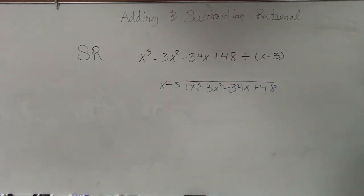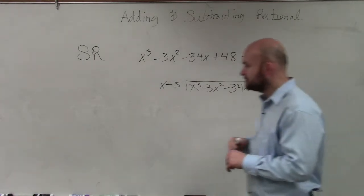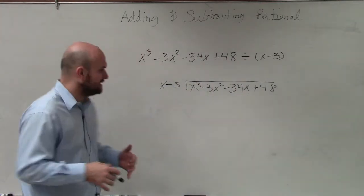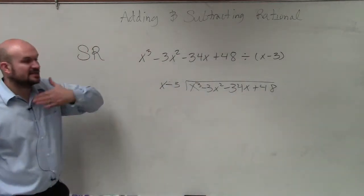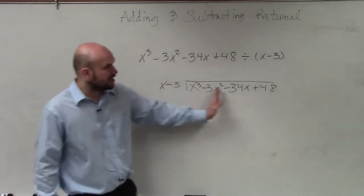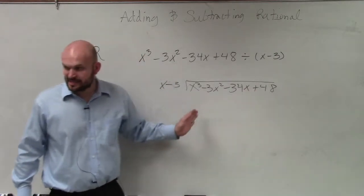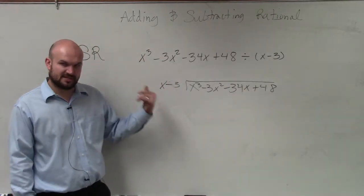So now, once we have it written into that format, x cubed minus 3x squared minus 34x plus 48. Now, what we're simply going to do is when we're doing this, we always make sure that's in descending order. So we want to make sure our dividend is in descending order as well as our divisor, which in this case works.